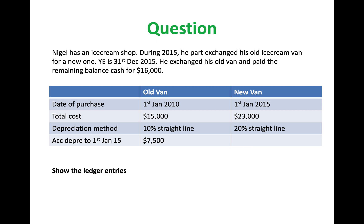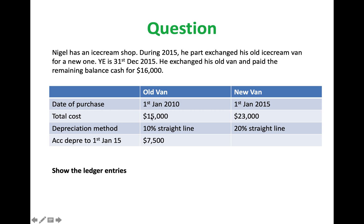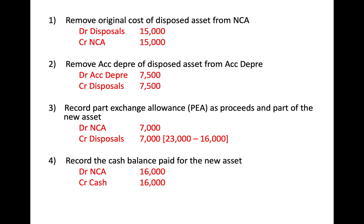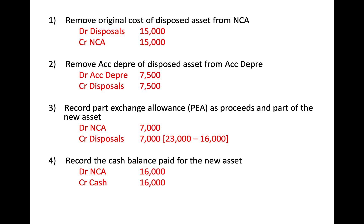Show the ledger entries. First, you need to figure out your double entries. You remove the original cost of the disposed asset from the non-current assets — this is given to you in the table as $15,000 for the old van. So you debit disposals and credit your non-current assets. The second step is to remove the accumulated depreciation, which is also given to you as $7,500 at the date of disposal. So you debit accumulated depreciation and credit disposals.